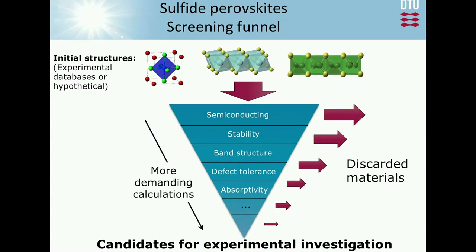We have earlier done work on oxides and oxynitrides perovskites, but for many reasons they were not optimal — the position of the valence band maximum was too low. Sulfides generally do better. So we decided to concentrate on sulfide perovskites with a screening funnel going through different properties. The question of ordering screening steps also matters: more demanding calculations should come at the end, after many materials have already been discarded.